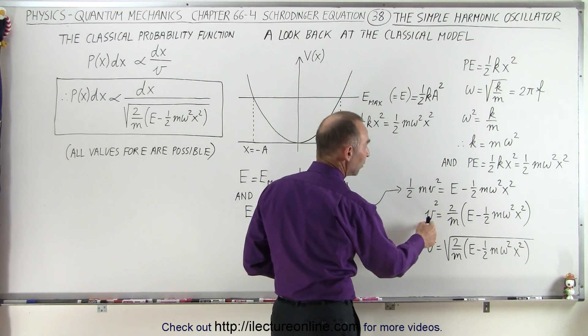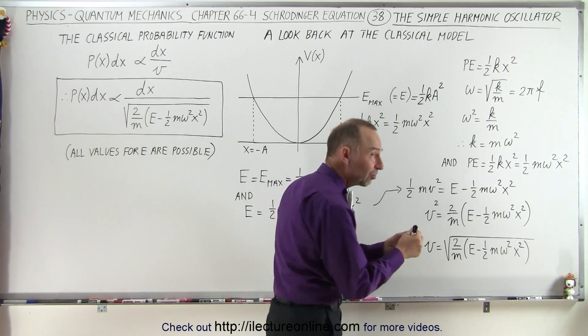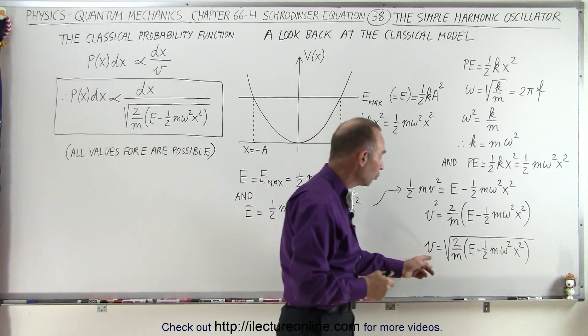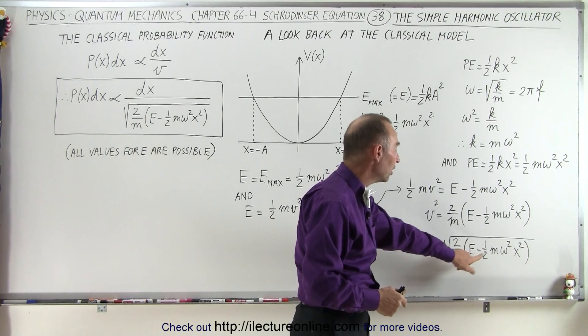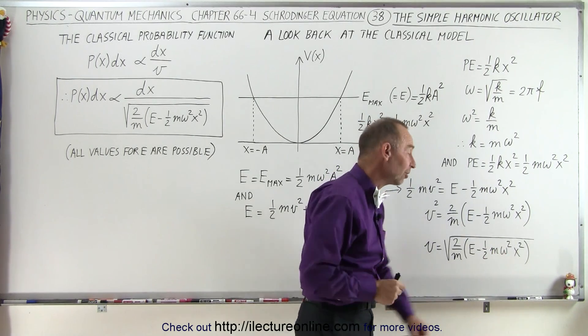And then if we solve this for v squared, and then eventually for v, we now have an expression for the velocity of the oscillator, as it's oscillating back and forth, in terms of its mass, the total energy and the angle of frequency and the position of the oscillator.